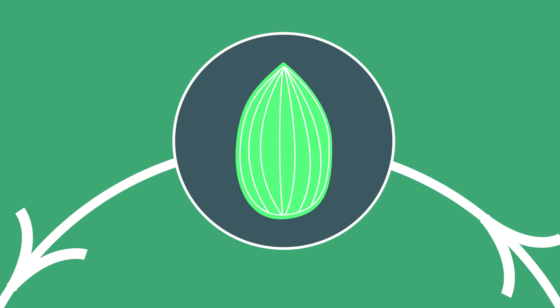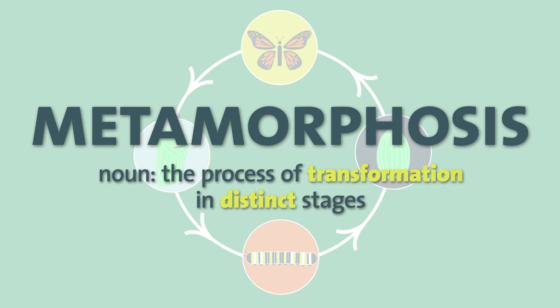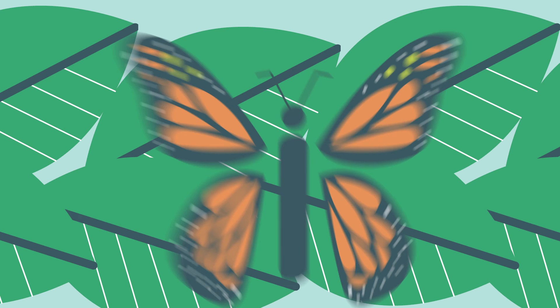This entire cycle, from egg to caterpillar to chrysalis to butterfly, is known as metamorphosis because the animal goes through striking, distinct life stages. Now our butterfly will find a mate so it can start the butterfly life cycle all over again.